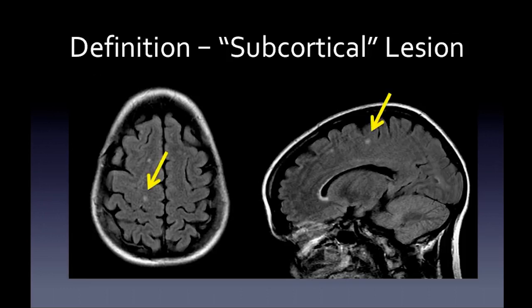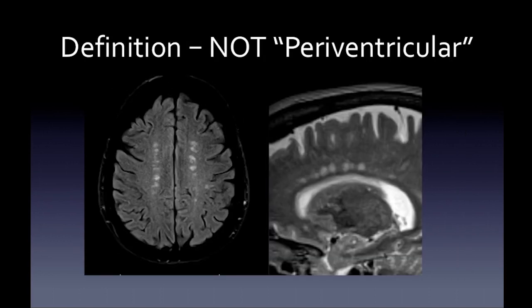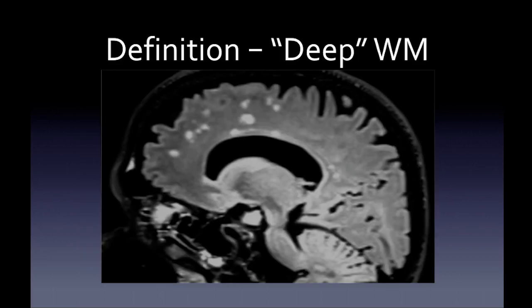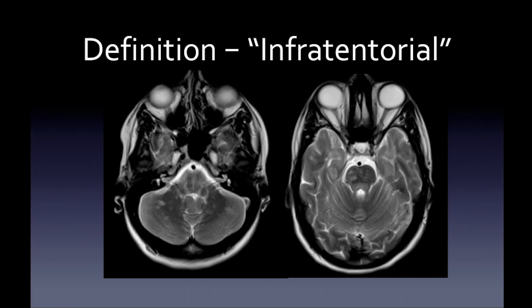Here's another example of subcortical lesions — thumbs down, not specific. For periventricular lesions, the lesion must be touching the ventricular surface. A lesion not touching the ventricle, not in subcortical white matter, and not cortical falls into deep white matter, which is also not specific for multiple sclerosis.